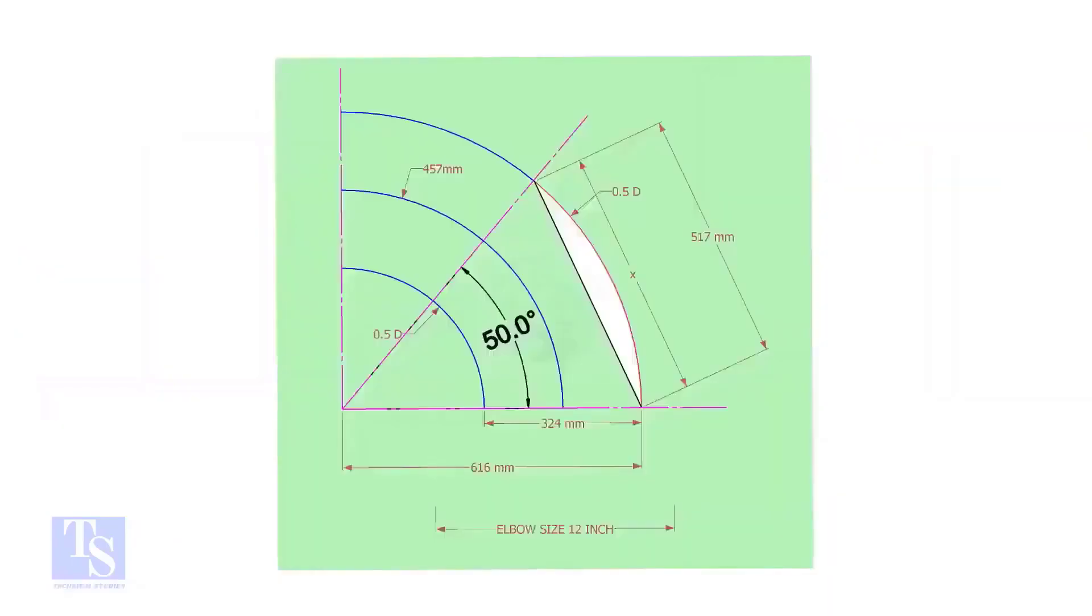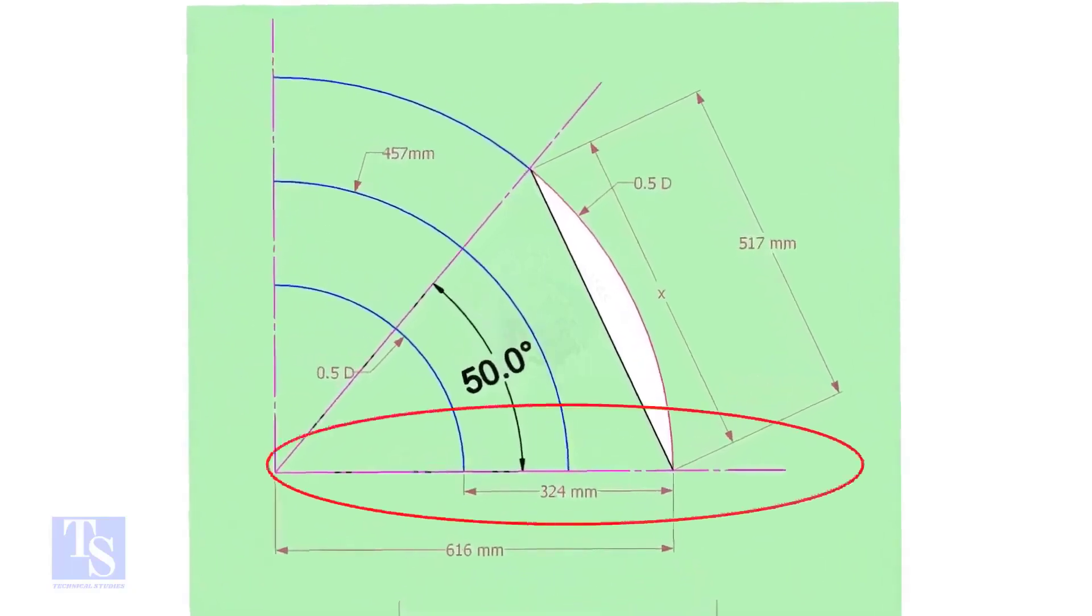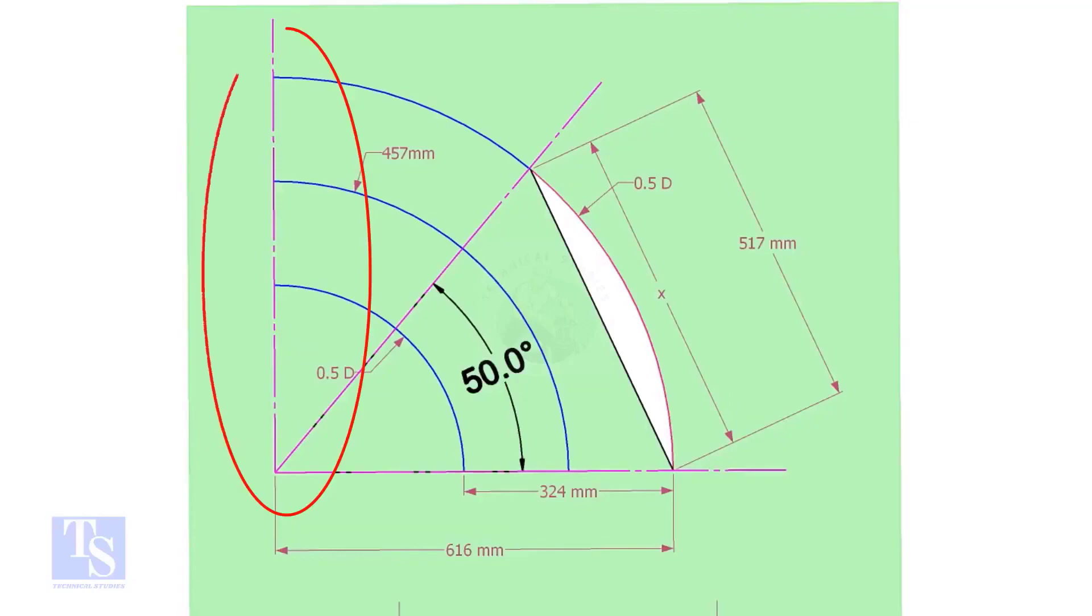Let us draw a simple layout of the elbow. Draw a horizontal line and another line perpendicular to this line. The center of a 12-inch long radius elbow is 457 millimeters. Draw an arc of this length.